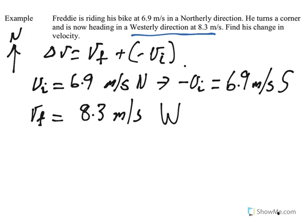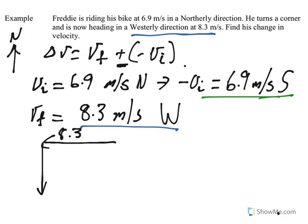It's vf plus negative vi. If we're using our north, south, east and west, and we're adding, so final plus the negative of the initial, plus head to tail. So the final, which is 8.3 to the west, plus head to tail, negative vi, so that's 6.9 south. And so the change in velocity is this orange one.